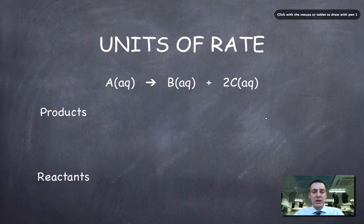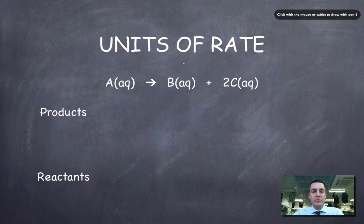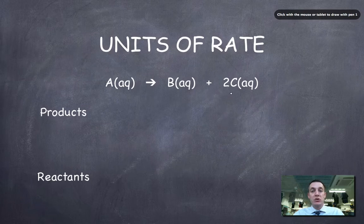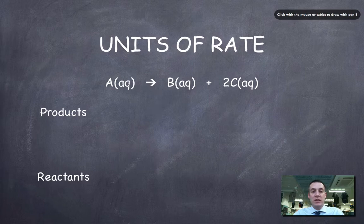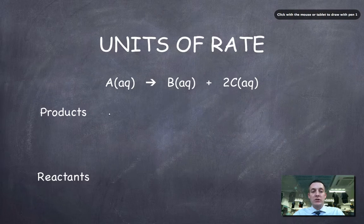So if we have a look at this chemical reaction here, we can see that all three substances in this equation are dissolved in water. And there's a reason for that, and that is because usually the units of rate are given as a change in the concentration of something.